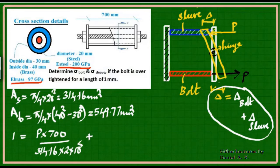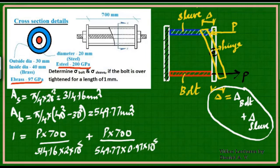Plus the force in sleeve is also P because it's action and reaction. So it's P × 700 / (549.77 × 0.97×10⁵). If I solve this equation, the only unknown is P. I'm going to get the value of P as 17570.4 N.